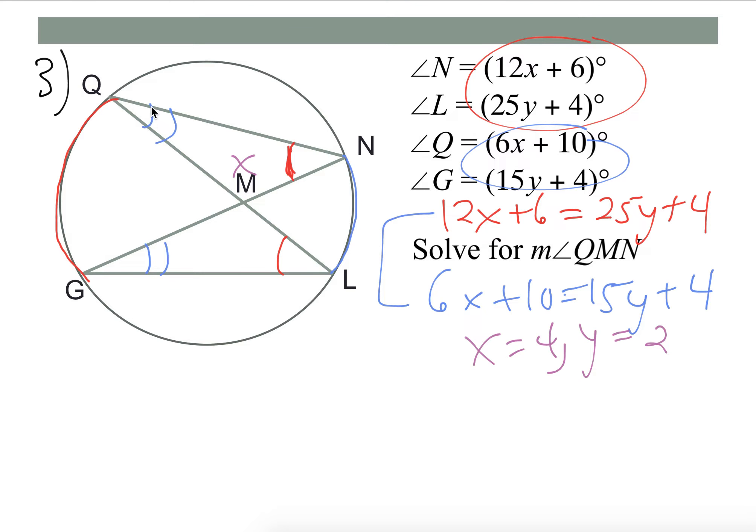So angle Q is here, so that's 6x plus 10. We know that x is 4, so angle Q is, we get 34.